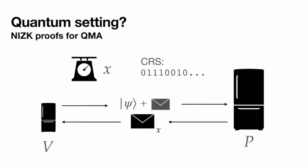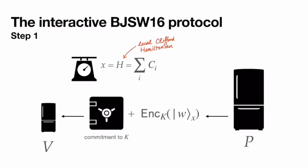To explain how we achieve this, I need to describe an interactive zero-knowledge proof system for QMA that inspires our protocol. The instance here is a local Hamiltonian — a measurement operator that's a sum of Clifford terms C_i — and the problem is to decide whether the Hamiltonian H has a smallest eigenvalue smaller than some number A or greater than some number B. This problem was shown to be QMA-complete by Broadbent, Ji, Song, and Watrous in the same paper where they propose their protocol.